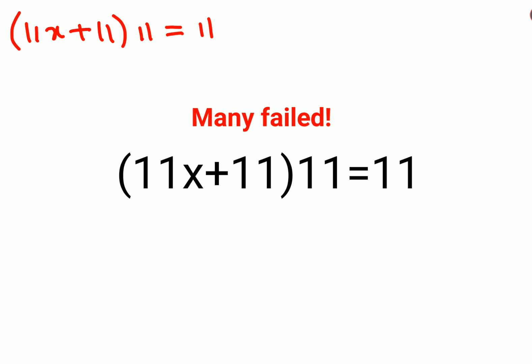Now what you have to do in these kind of scenarios is you go from outside to inside. So what we will do is divide both sides by 11 first. What will happen is this and this 11 gets cancelled. This also gets cancelled and now your entire question changes to 11x plus 11 equals to 1.